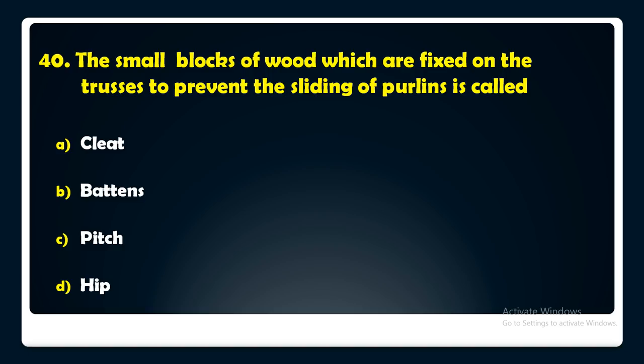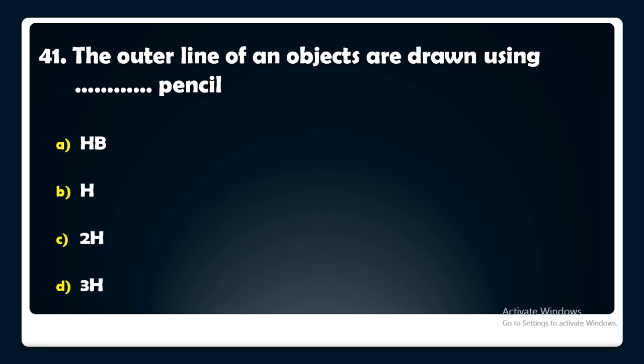The outer lines of an object are drawn using which pencil — HB, H, 2H, or 3H? The answer is: the outer lines of an object are drawn using an H pencil.